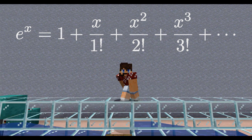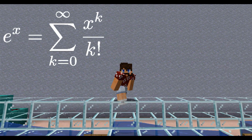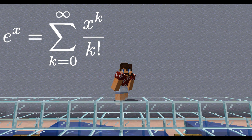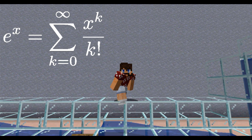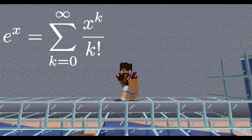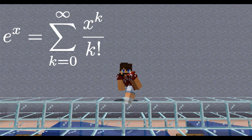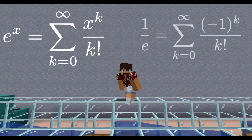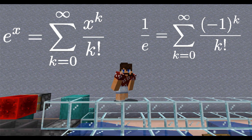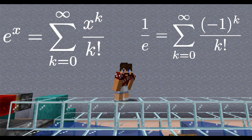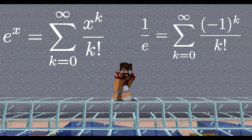We could rewrite this as E to the X equals the sum from K equals 0 to infinity of X to the K over K factorial. And when we evaluate at x equals negative 1, we get 1 over e equals the sum from k equals 0 to infinity of negative 1 to the k over k factorial.